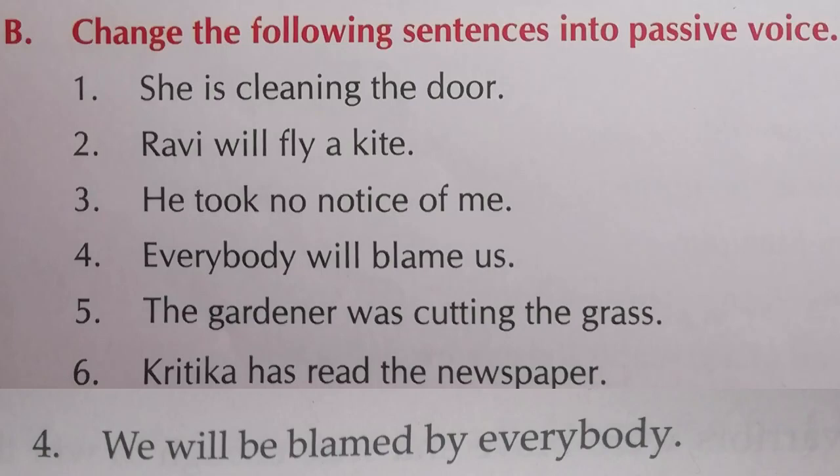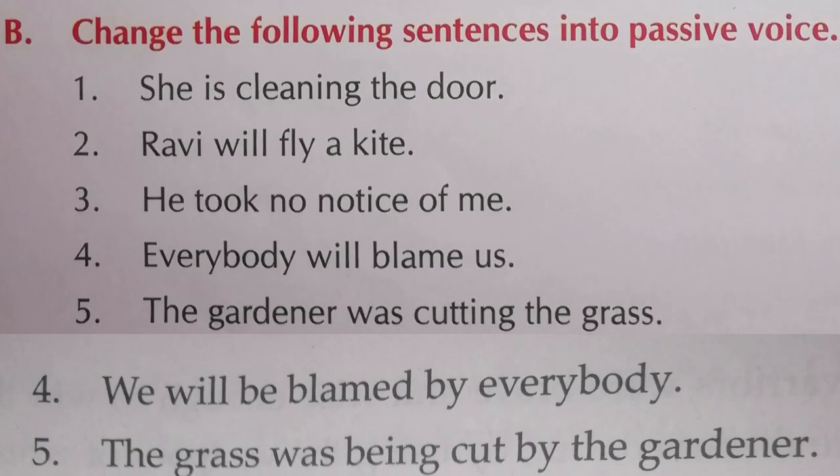Now the fifth: 'The gardener was cutting the grass.' Here 'the grass' comes to the first place, and 'the gardener' goes to the last place as object. 'Was cutting' uses '-ing' — meaning it is continuous. As I told you, 'being' is applied where '-ing' is used. 'Was' remains 'was' — the tense does not change. Answer: 'The grass was being cut by the gardener.'